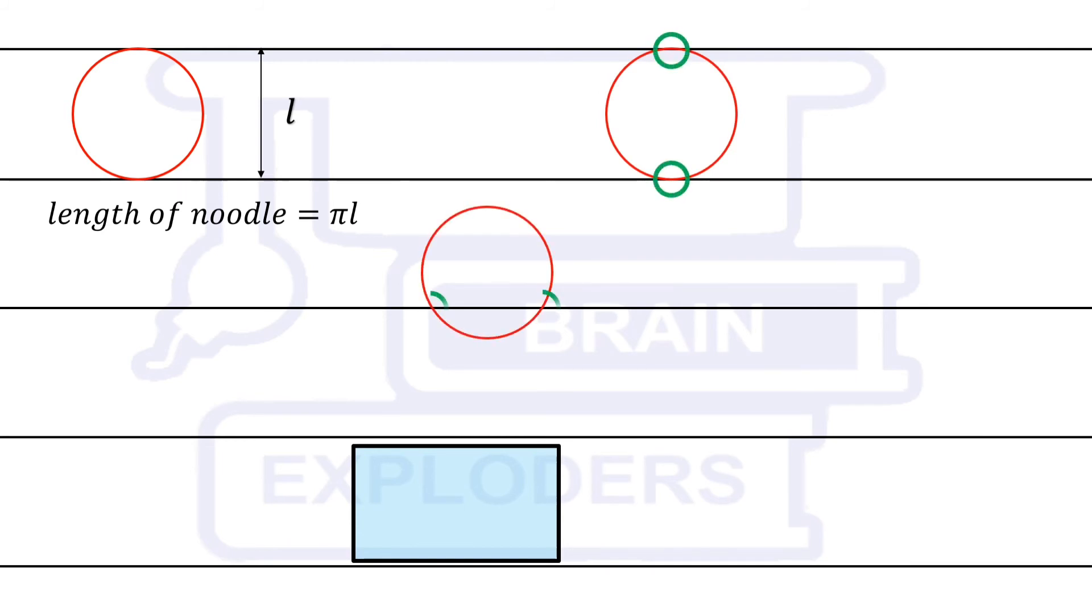Therefore, its probable number of intersections is two. Now taking the average of many twos also we get two.